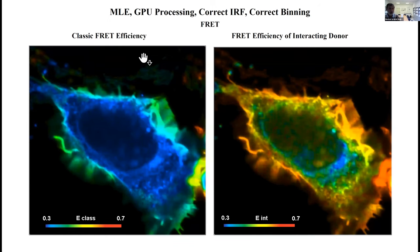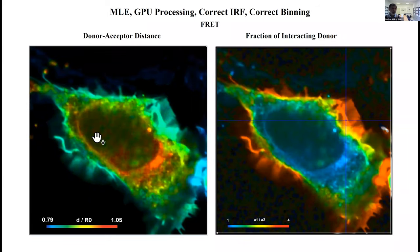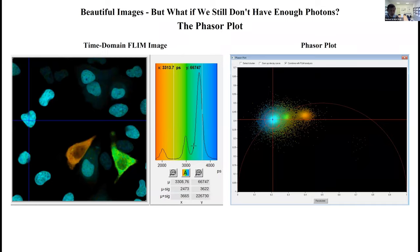Here's a FRET example. Double exponential decay analysis. The result is you get classic FRET efficiency, you get the FRET efficiency of the interacting donor, you get the donor-acceptor distance, and you get the fraction of interacting.